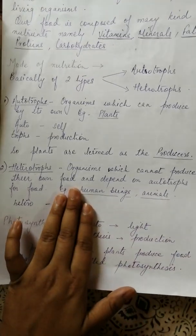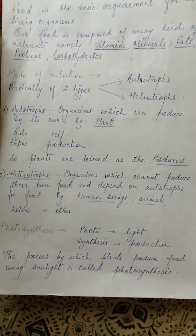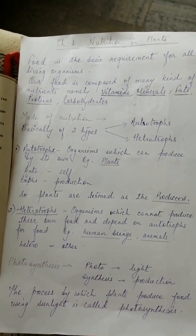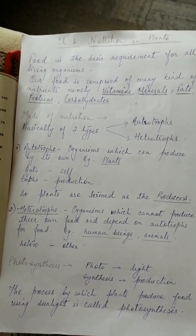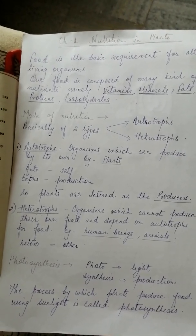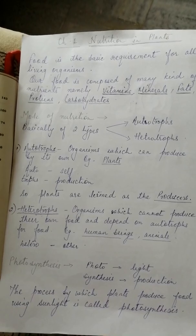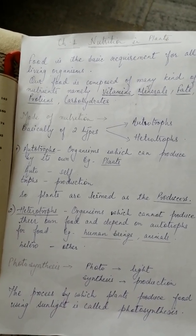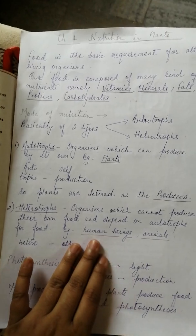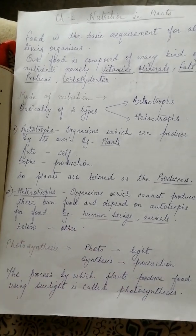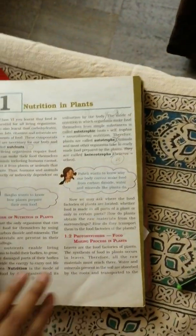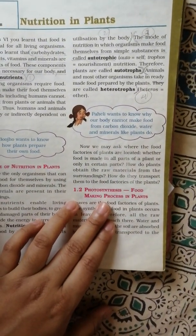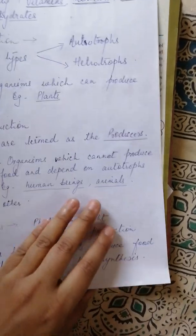The second type is heterotroph — organisms which cannot produce their own food, or organisms which are dependent on the autotrophs directly or indirectly for their food, are termed as heterotrophs. Examples include human beings and animals. Our next topic is photosynthesis, which is also called the food-making process in plants.